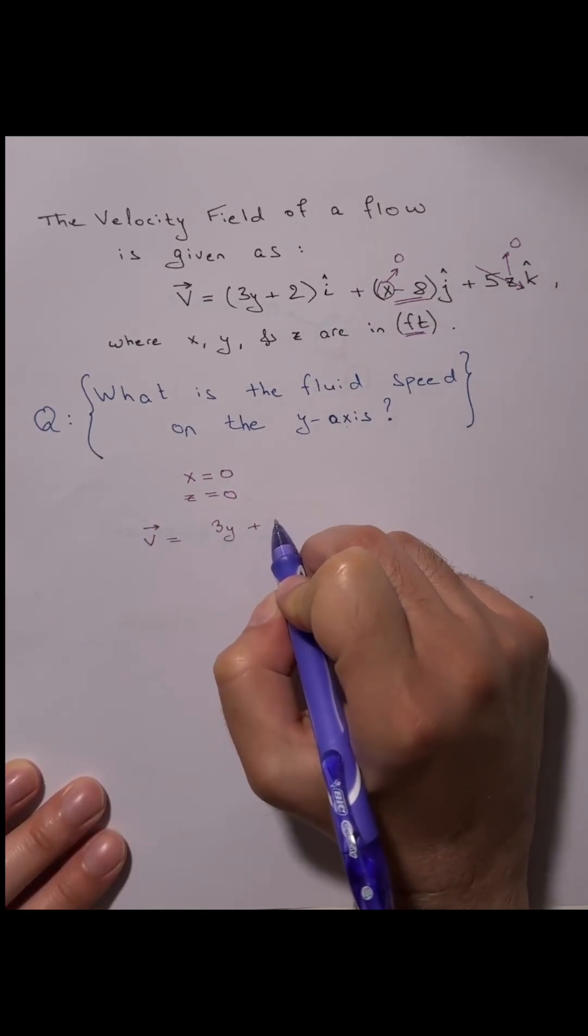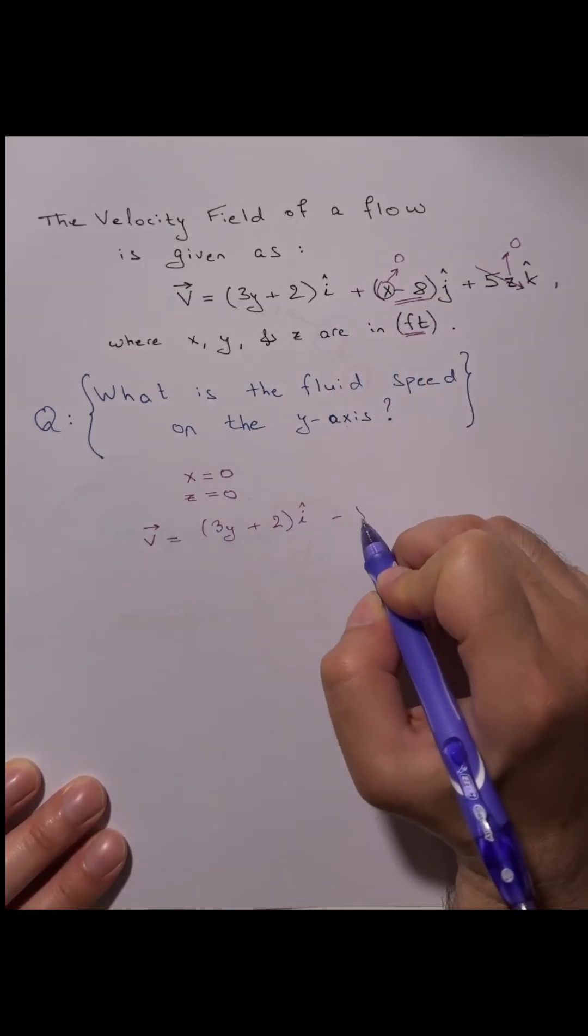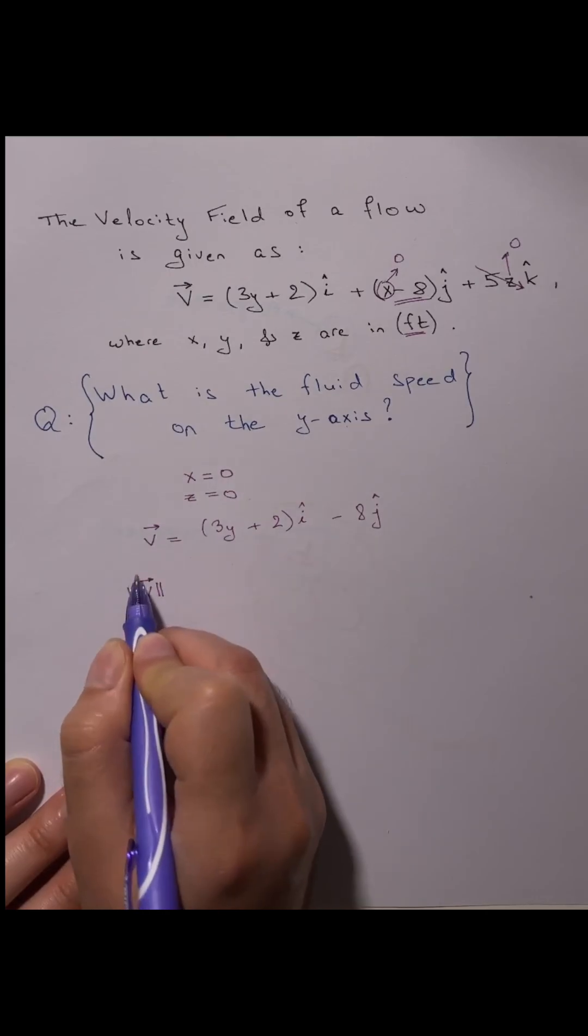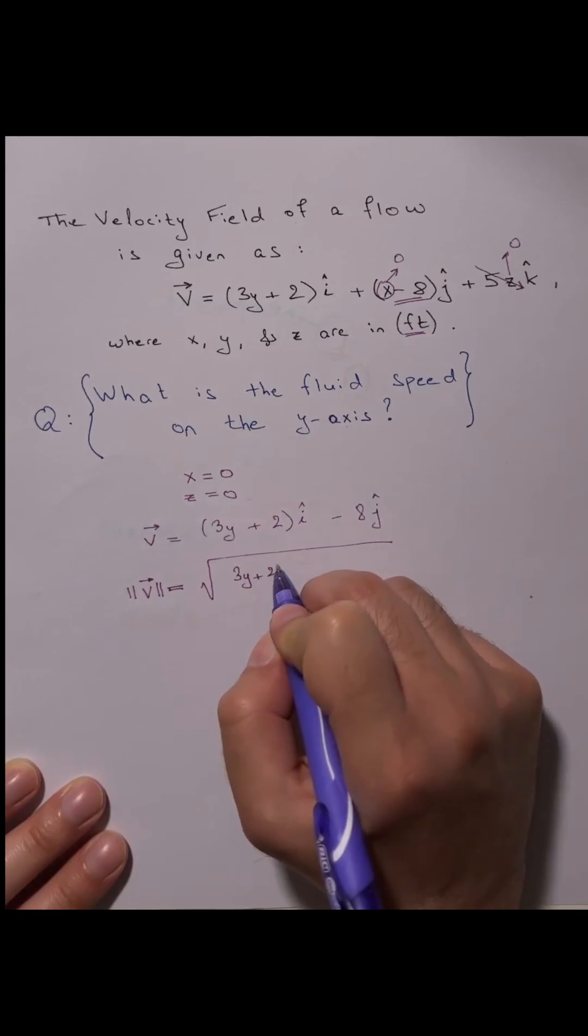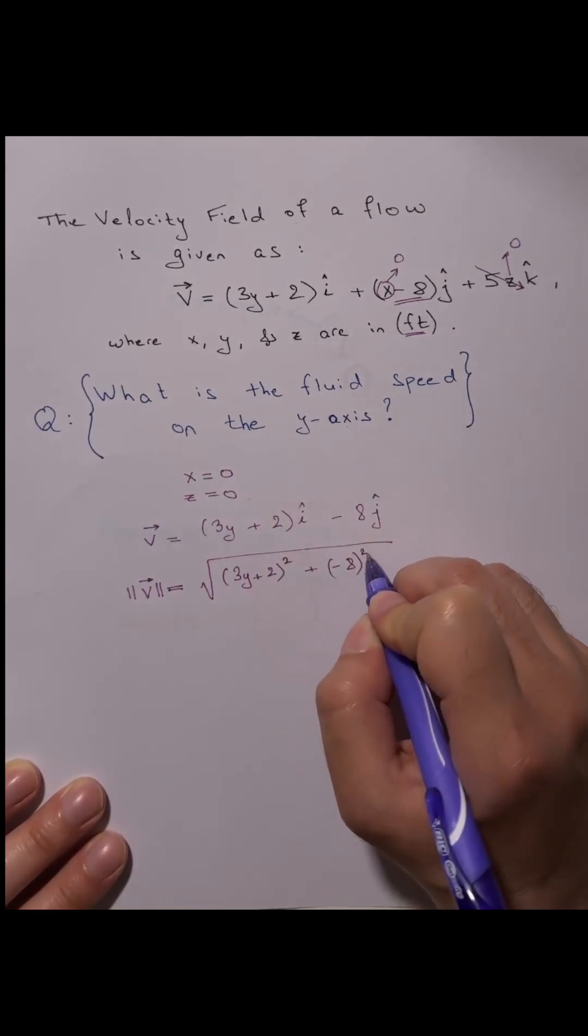So we're left with a vector 3y plus 2i minus 8j, but we need to find the speed which is a scalar. So the speed is the square root of 3y plus 2 squared plus minus 8 squared.